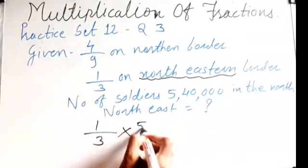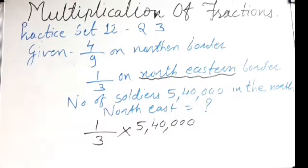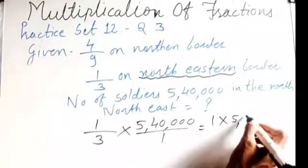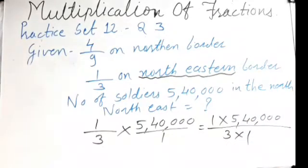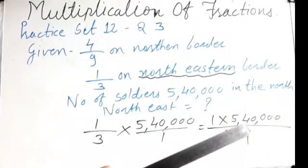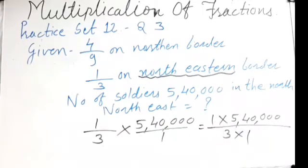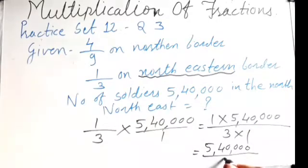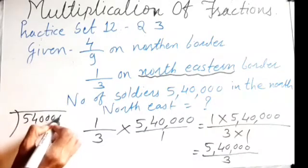One-third out of how many? Five lakh forty thousand total. So we multiply: one-third of five lakh forty thousand. That gives us one multiplied by five lakh forty thousand upon three multiplied by one. You can directly divide by three, or multiply — either way you get five lakh forty thousand upon three.